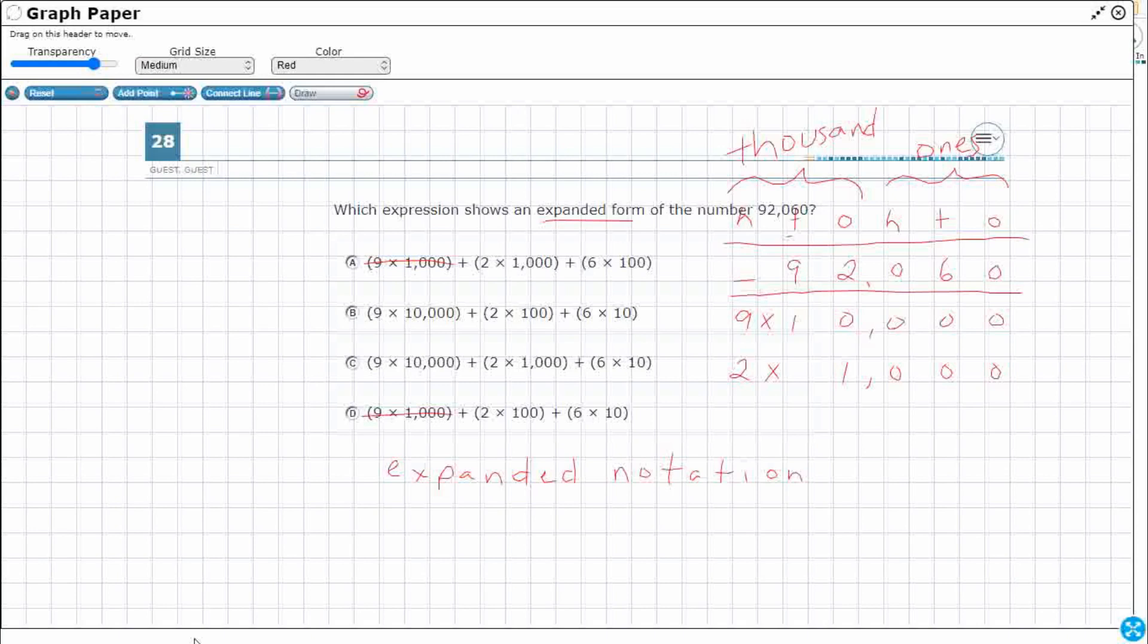So two times 1,000. You know what, that C is looking good. The B is not looking good because of that two times 100, but that two is in the 1,000 place.